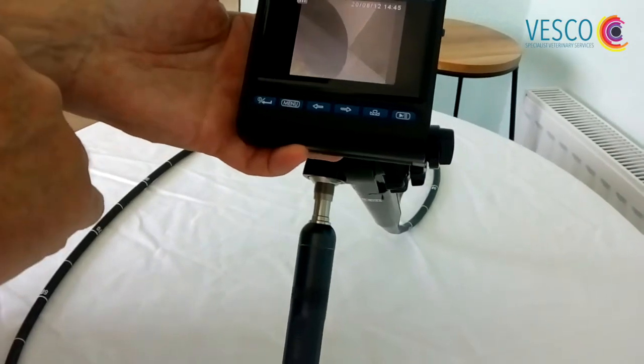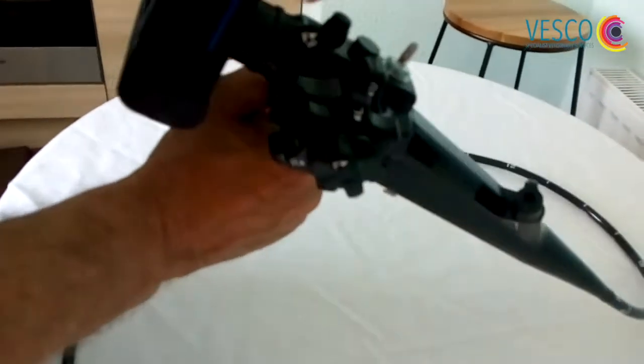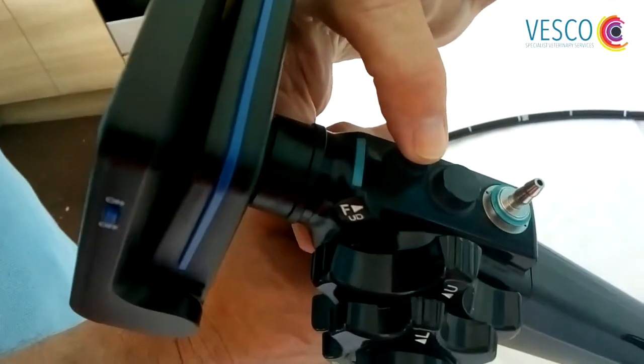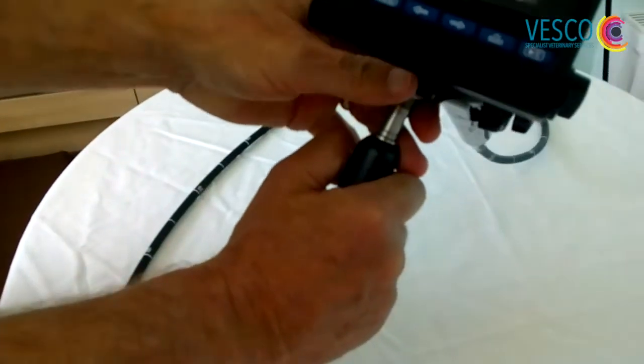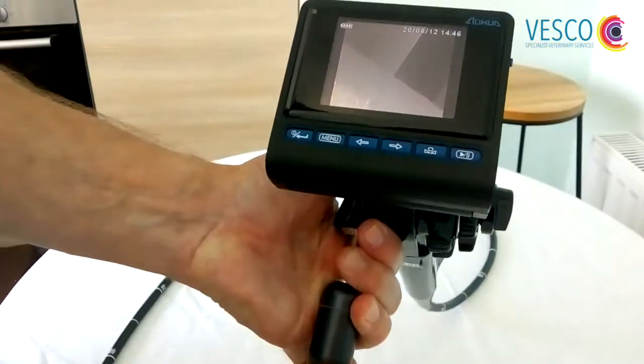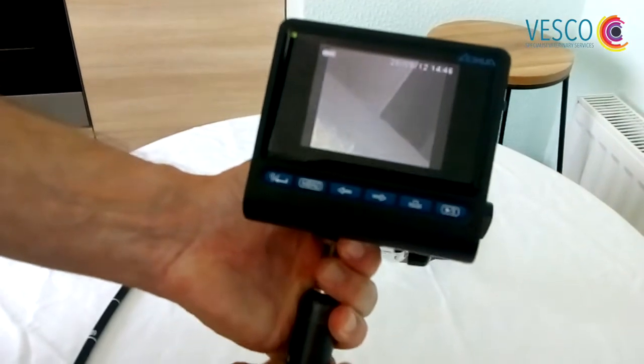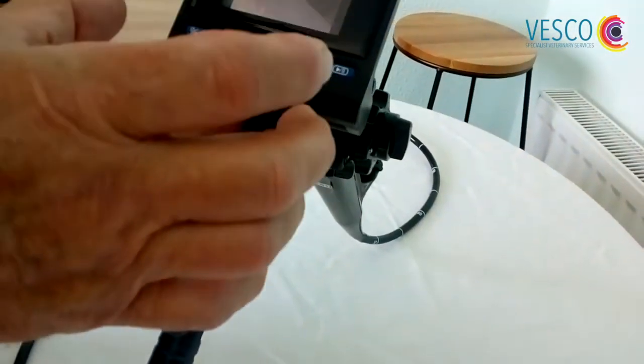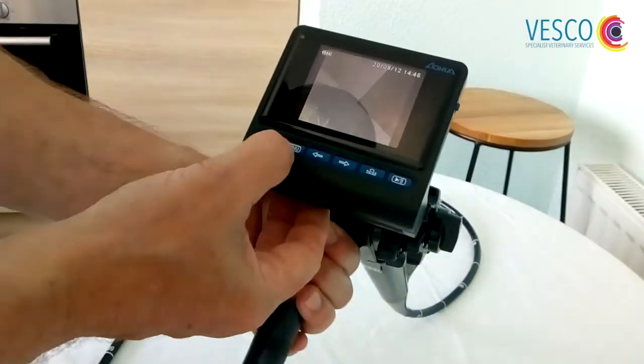To take a photograph, we press this little button at the back here. You simply press it once. What you'll see hopefully is a very quick flash of a camera up in this area here. That now means that that photograph has been delivered to the SD card.